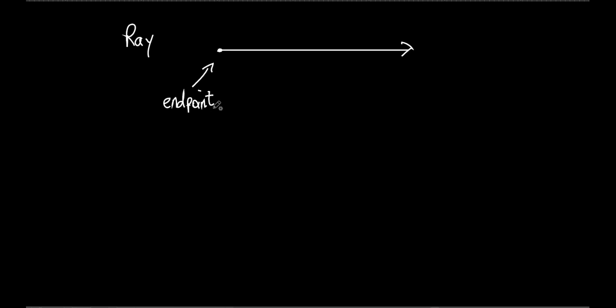The endpoint is really important — when we name a ray, we always start at the endpoint. So let's call one end A and another point B. If you were going to name this ray, you'd say ray AB. I couldn't just say ray A because I wouldn't know which direction it goes. You have to start at the endpoint and then name one more point that it goes through.